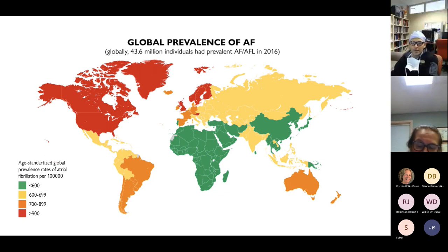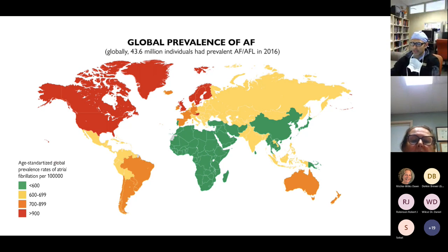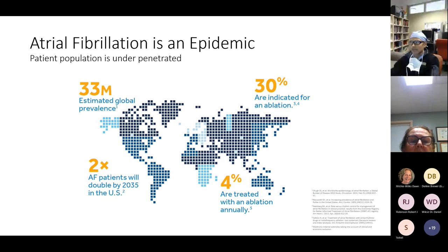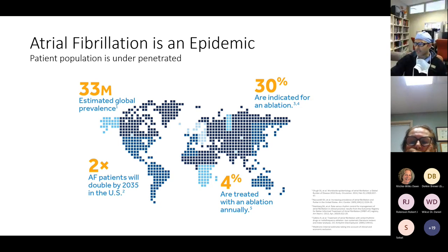Here's a global map showing that atrial fibrillation is everywhere — it's a big part of North America, the US, and Europe. As you can see, it's an epidemic. It's estimated there are around 33 million cases globally, and by 2035 that number is actually estimated to double.